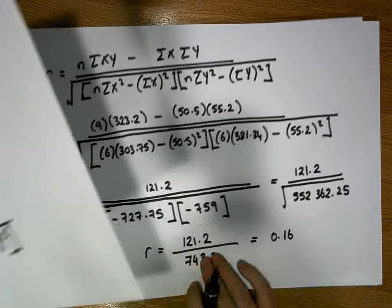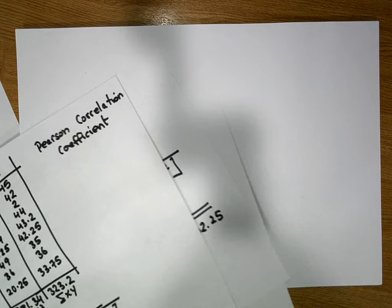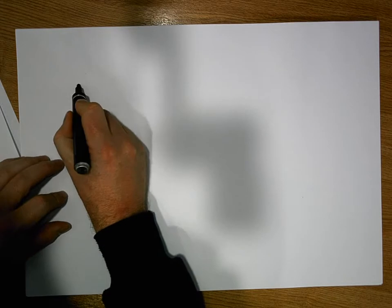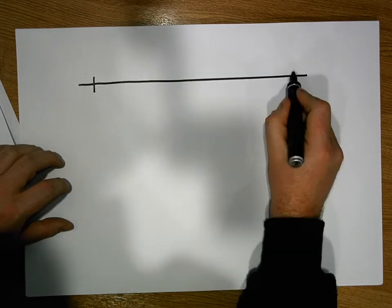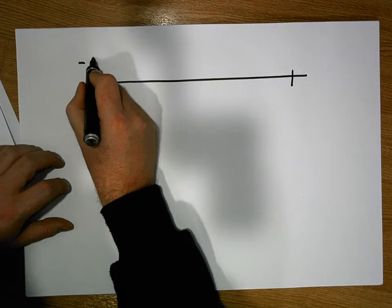So we can interpret the value in many different ways. And I suppose a rule that we're going to use is we're going to look at the number line. We know that the correlation coefficient is a value between minus 1 and plus 1.